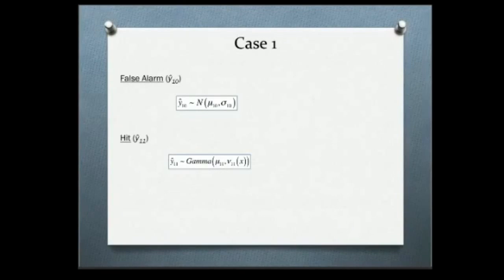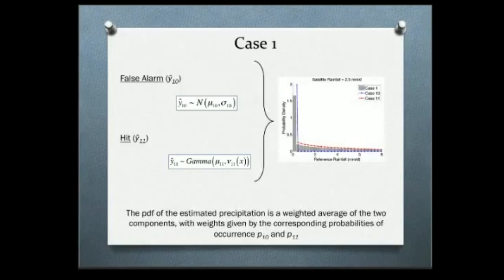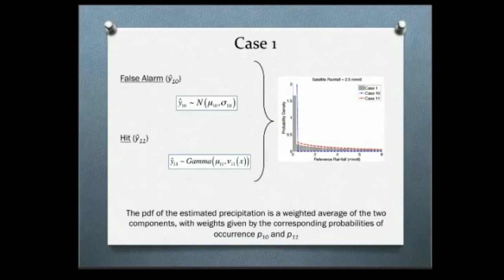For the case where the satellite says rainfall, I use the normal distribution for false alarms and the gamma distribution for hits, and combine the two using the probability of false alarms. The blue line is the normal distribution for false alarm cases, the red line is the hit distribution. Combining them by weighting using probabilities, I obtain the grey histogram — the output of my model for case one.